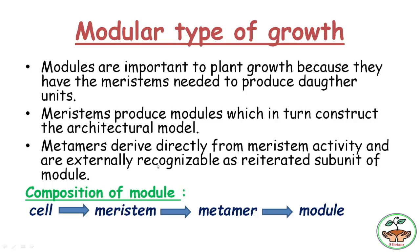One important point here is the modular type of growth. This is made clearer by the flowchart shown. The first unit is the cell — the basic structural and functional unit of life. Cells form a group called a tissue, and there are different types of tissue in the plant body. One special type is the meristem, which has the capacity to divide continuously and give rise to other different types of tissues.